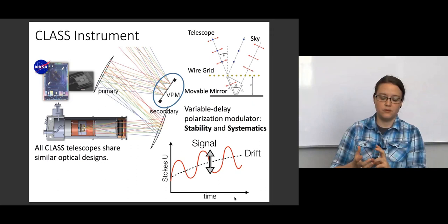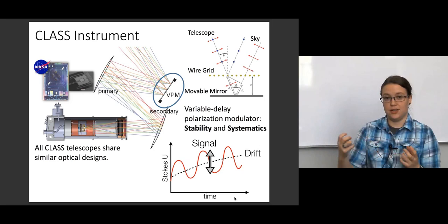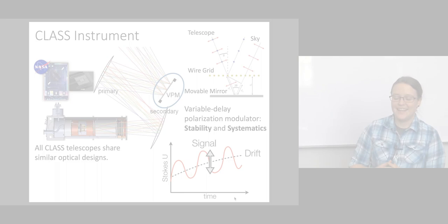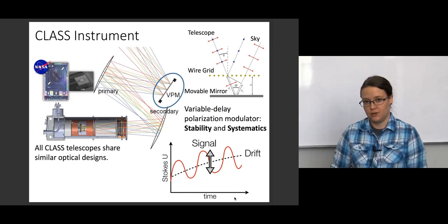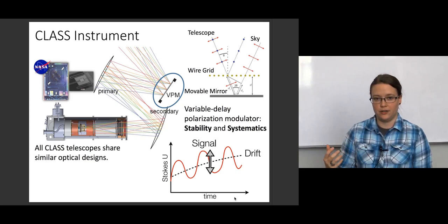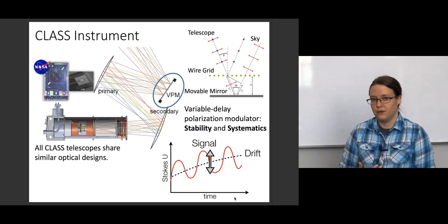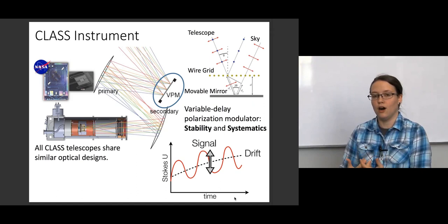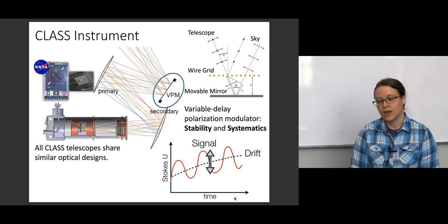And when you kind of follow this through, what this does is it actually takes linear polarization, changes it into circular polarization and back as the mirror moves, as the distance between the mirror and the grid changes. Now, the sky, we don't expect it to have significant circular polarization. We don't expect this cosmic microwave background or any of the galactic signals on large angular scales to have circular polarization. So, in effect, what the VPM is going to do is it's going to turn our signal, the linear polarized signal we're looking for, on and off ten times a second, because we're going to move this mirror at ten hertz.